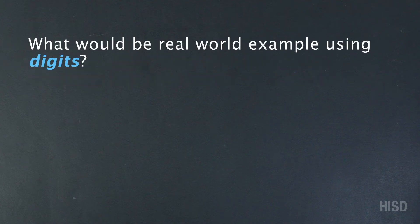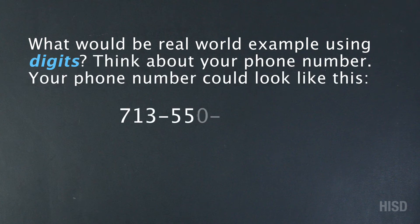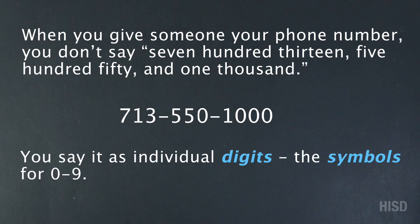What would be a real-world example using digits? Think about your phone number. Your phone number could look like this. When you give someone your phone number, you don't say 713, 550, and 1000. You say it as individual digits — the symbols for zero through nine: 7-1-3-5-5-0-1-0-0-0.